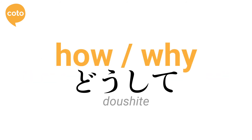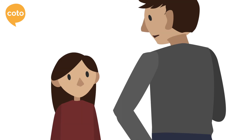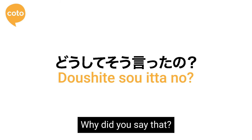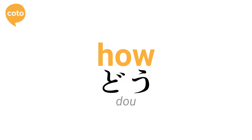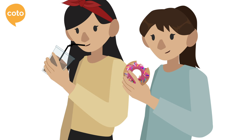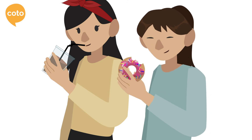The second word, 'dooshite,' can be used in certain contexts to express 'how' or 'why did that happen.' Last but not least, we have 'dou,' which is specifically used to refer to 'how' when used as a question. It can also mean 'in what way,' 'how was it done,' or 'how was it.'